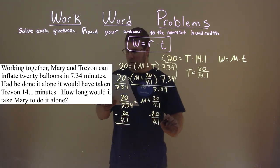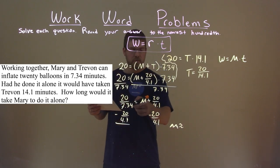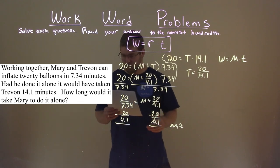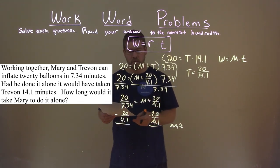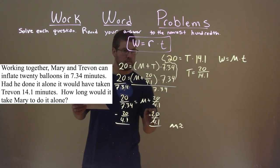And we have, well, Mary's rate is going to be approximately, okay, so it's going to be by itself now because this will cancel, is approximately 20 over 7.34 minus 20 over 4.1. 14.1.